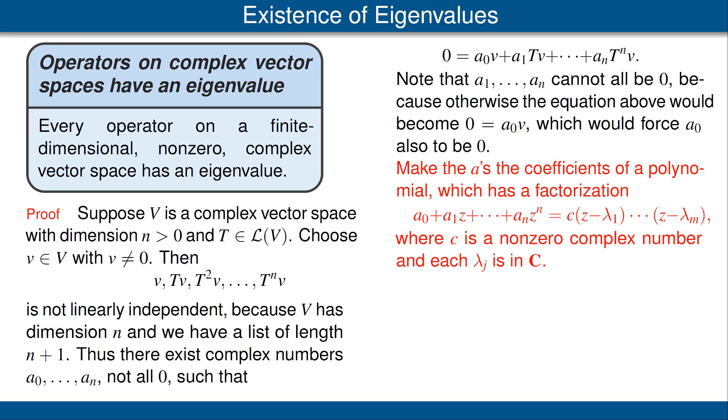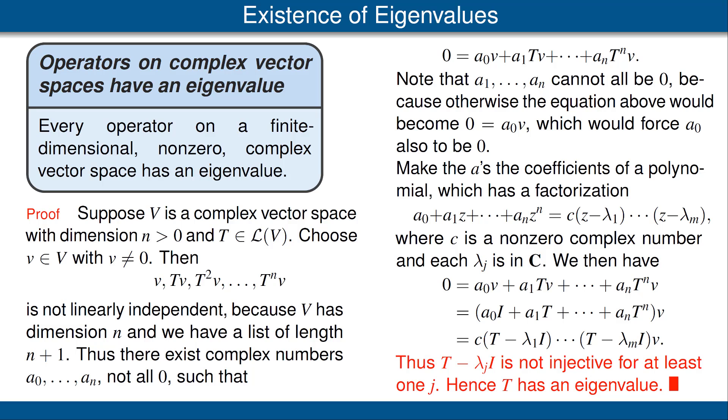Notice how we are using the hypothesis that we're working in the complex numbers, because polynomials with real coefficients cannot necessarily be factored in this form using real numbers. Now we have the equation shown here in red, which is the same as the equation at the top of this column. We can rewrite that equation as follows, shown in the second line here. Finally, using the factorization above, this equals what is now shown in red. Look at this last equation carefully. We're applying some operator to the non-zero vector v and ending up with zero on the left-hand side. This means that at some point in evaluating the right-hand side, we're applying T minus lambda j times the identity operator to a non-zero vector and getting zero. In other words, T minus lambda jI is non-injective for at least one of the j's. Thus, T has an eigenvalue, completing the proof.